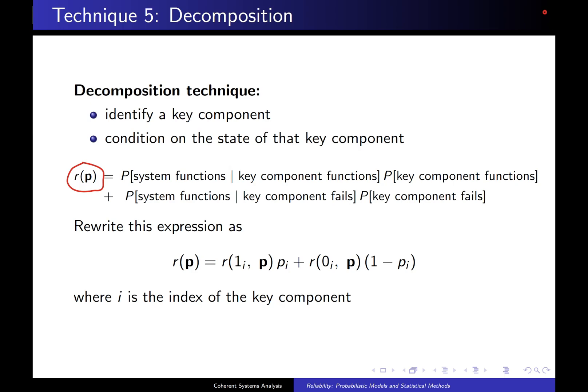Instead of writing that out in words, you can also write it out symbolically, where r(p) is r(1_i, p) times p_i plus r(0_i, p) times 1 minus p_i, where i is the index of the key component. This r(1_i, p) and r(0_i, p) is defined in exactly the same fashion as we did for structure functions.